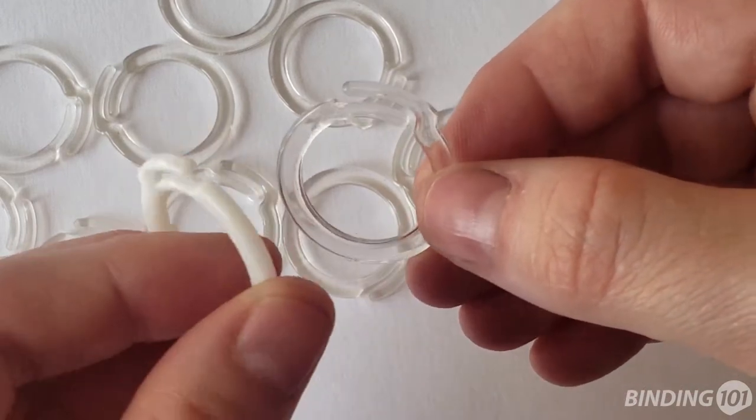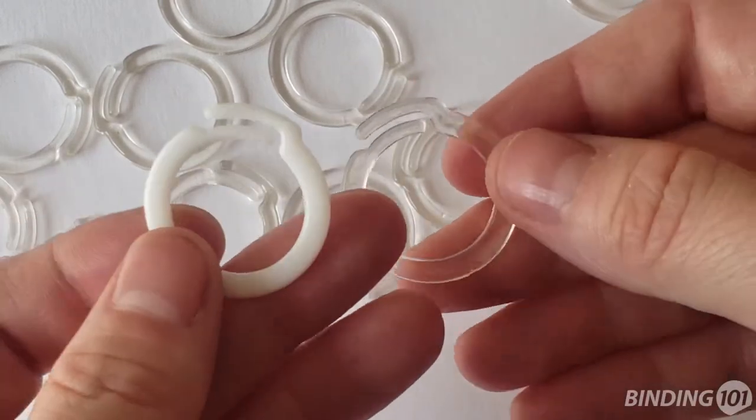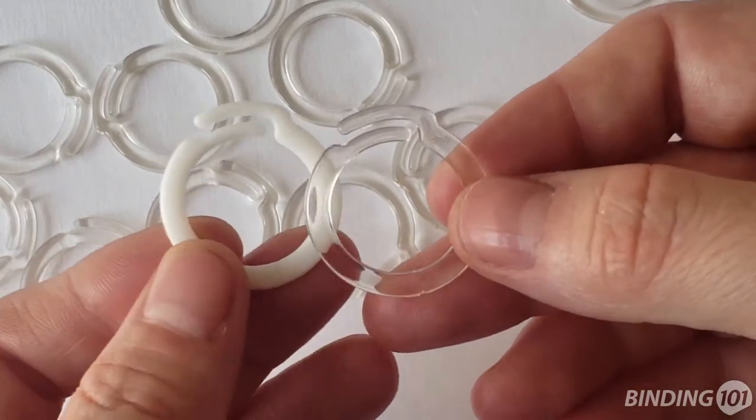Plastic overlap binding rings are an incredibly affordable and convenient way to bind together loose pages, hang retail displays, use for crafting, and more.